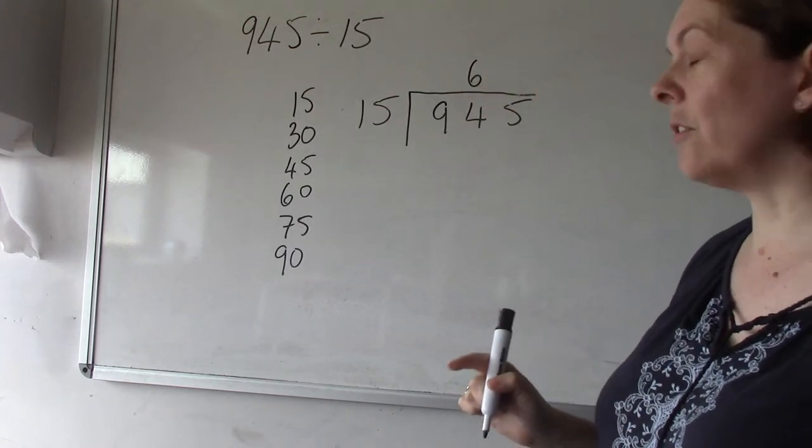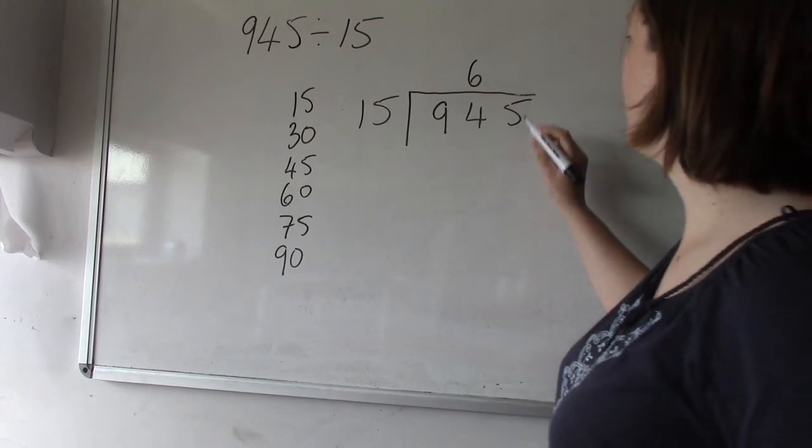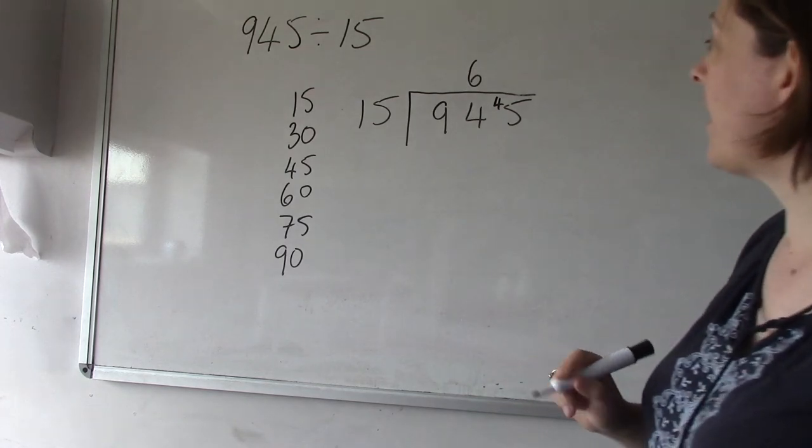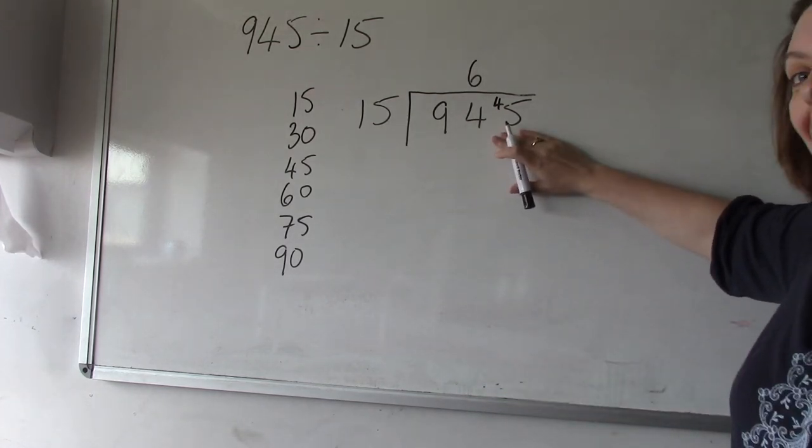Obviously that's 90 not 94. So the difference between 94 and 90, quick takeaway sum, is 4. And I carry that forward and I'll put it in front of my 5 to show that the next lot of numbers that I want to see how many 15s are written is 45.